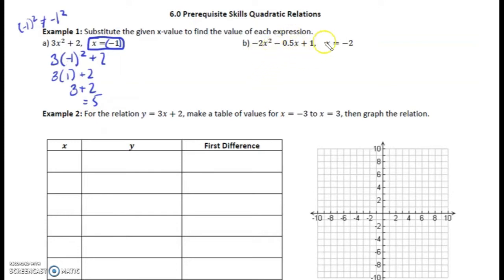Now x equals negative 2. I'm going to go ahead and substitute that negative 2 into the brackets, exactly where the x's are. So this is negative 2 times negative 2 squared is 4. Negative 0.5 times negative 2 is plus 1, and then bring that down, plus 1. So we get negative 8 plus 2, which is negative 6.